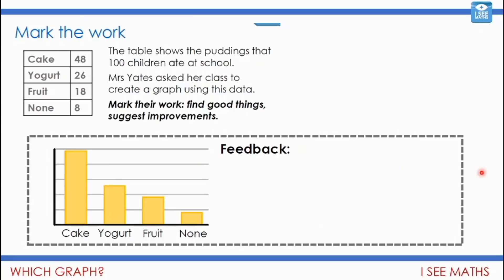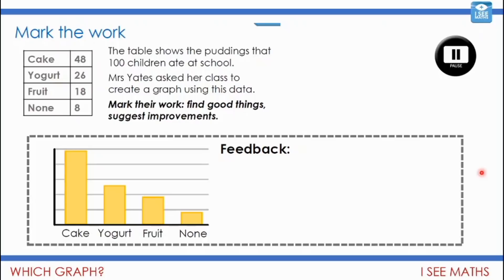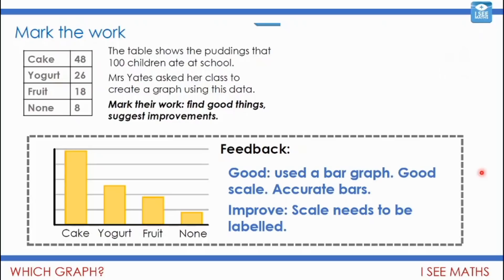How about this last example? What's been done well? Anything that could be improved? The bar graph has been used, which is great. We've got a good scale — the numbers are very clear and the bars are accurately plotted. But the scale just needs to be labelled as well.